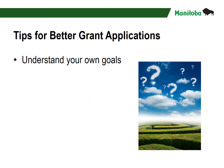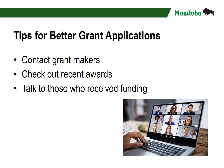Manitoba Sport, Culture and Heritage has an excellent website with tips for better grant applications. First, understand your own goals before looking for grants — make sure there is a fit between what your organization wants to accomplish and what the grant program will support. Contact grant makers before you write your proposal to be sure you clearly understand the program guidelines, then follow the guidelines to the letter. Check out your target agency's recent awards. Narrow down your list to the most promising prospects by seeing what they have supported in the past. The Manitoba Sport, Culture and Heritage website has a list of past grant recipients and their projects. Talk to those who have received funding and ask for advice.